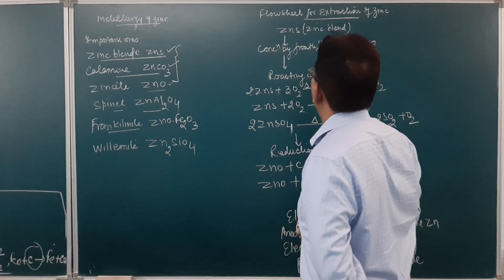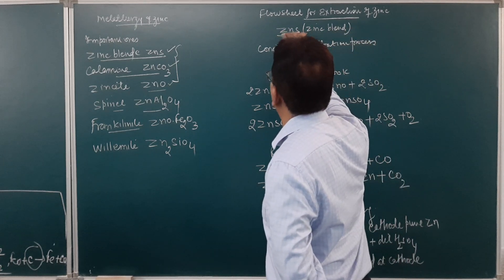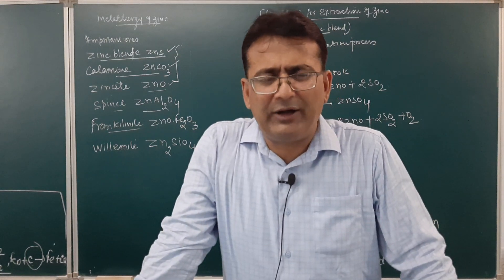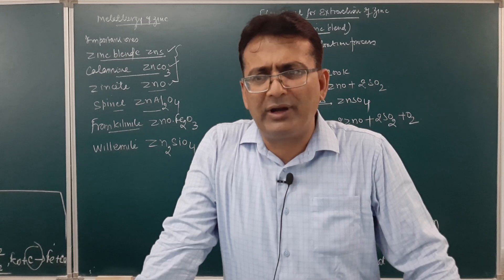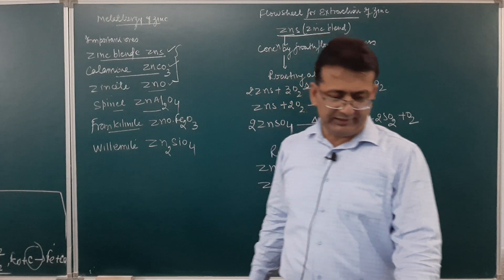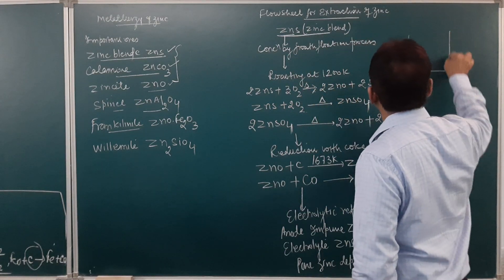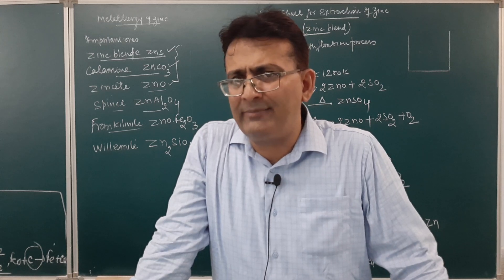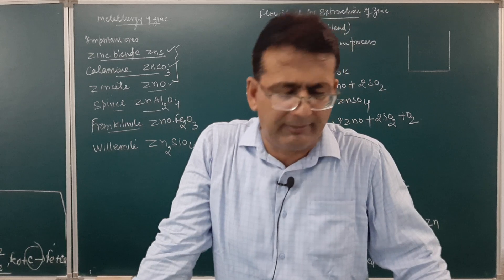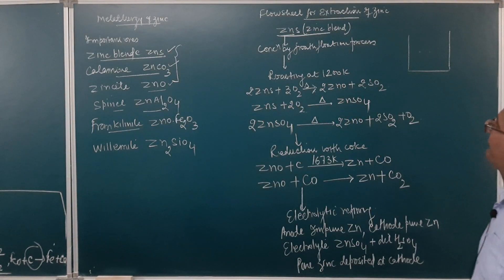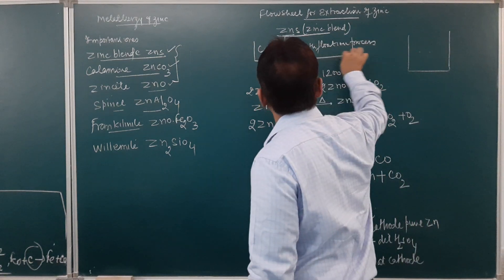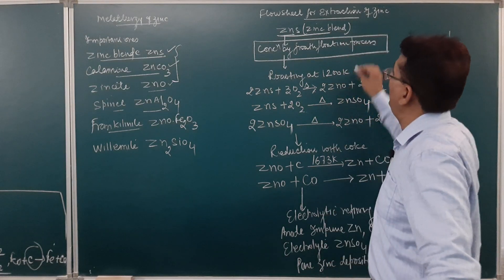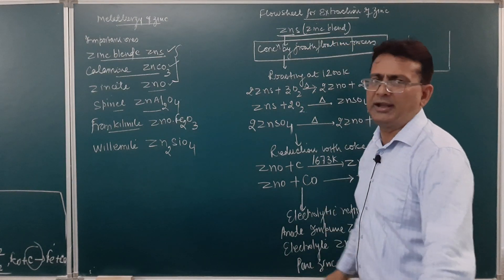Zinc blende is a sulfide ore with formula ZnS. The sulfide impurities are removed by the froth flotation process. In this process, a tank contains the ore with water, pine oil, and a collector; compressed air is passed through. The sulfide ore rises as froth and is removed as scum, while other impurities settle as gangue.